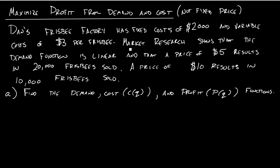Now, there's this funny thing about market research showing that we have a linear demand function, and it's going to give me two points here. It tells me a price of $5 gives me 20,000 Frisbees, a price of $10 results in 10,000 Frisbees.